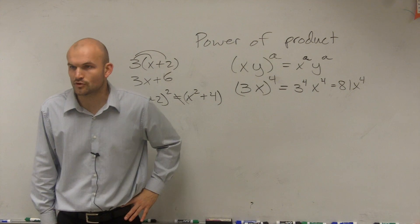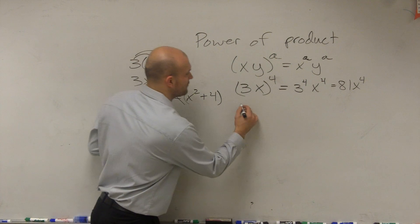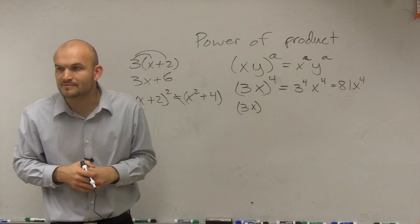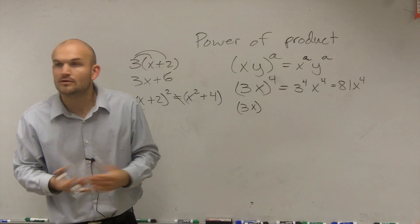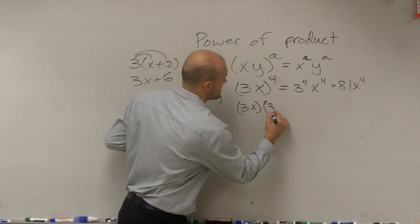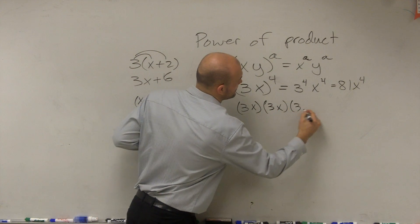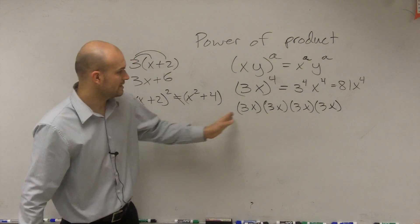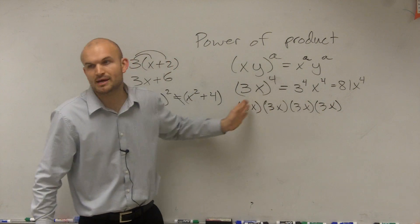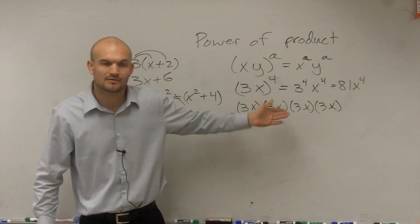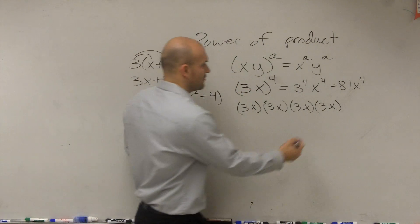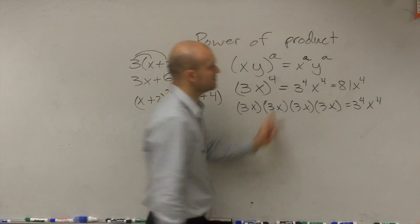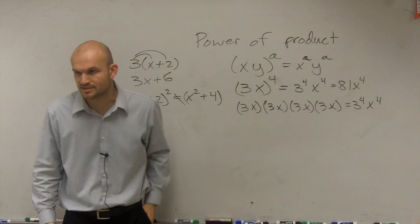What does (3x) to the fourth really mean? It means you're going to take 3x and multiply it by itself 4 times: 3x times 3x times 3x times 3x. How many times are you multiplying 3 by itself? 3 to the fourth — which gives us 81 — and then x to the fourth, which we've already shown is 81x to the fourth.